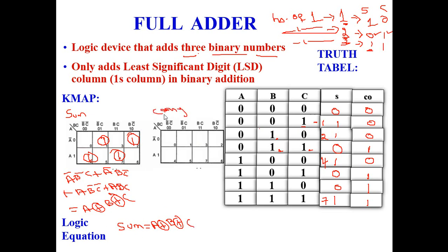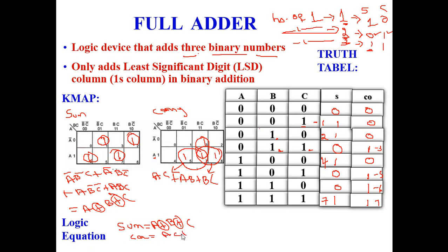For the full adder K-map of carry, carry is high at positions 3, 5, 6, and 7. Three groupings are possible: positions 5 and 7 give AC (B cancels); positions 7 and 6 give AB (C cancels); positions 3 and 7 give BC (A cancels). Therefore, the carry equation is: Carry = AC + AB + BC.